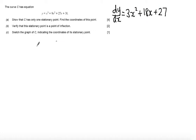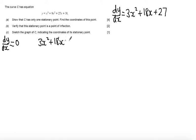I want to now find the stationary points. At a stationary point the gradient dy by dx is equal to 0. So I set up the equation 3x squared plus 18x plus 27 equals 0. It's at this point that we can start to manipulate the equation like dividing it, but to find a gradient it must remain untouched in the form written here.